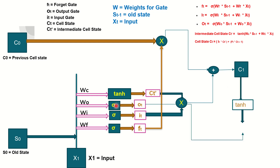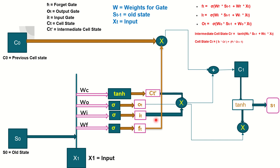Finally, we compute the output gate OT through sigmoid using the old state and the input. Taking OT and applying tanh to C1, then multiplying OT × tanh(C1), gives us S1 — the next hidden state. This completes the full LSTM forward pass. If you have any queries please type them in the comment section, and try working through it on paper once or twice to get the flow. Thank you very much.